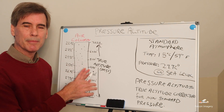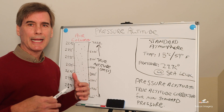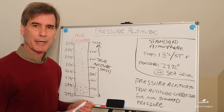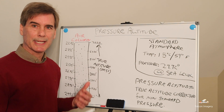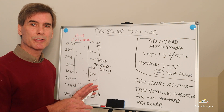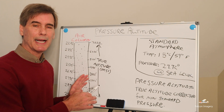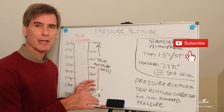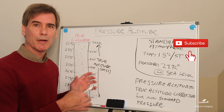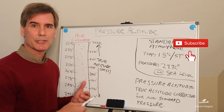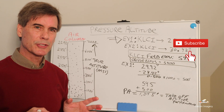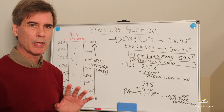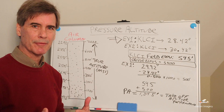With this information in mind, we can go to an airport, get the barometric reading, and calculate what the pressure altitude is. I'm going to show you a couple of examples on how to calculate pressure altitude based off the barometric pressure reading you get when you listen to the ASOS or AWOS at your local airport. I'm going to look at two examples here.